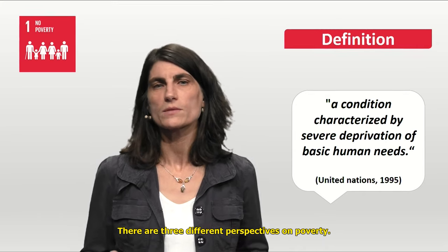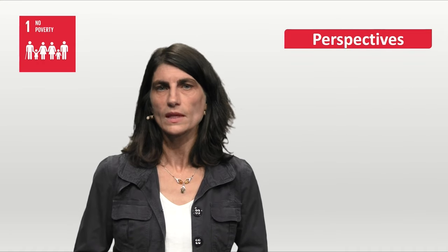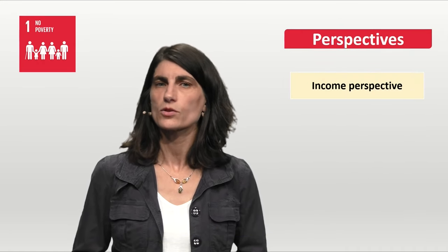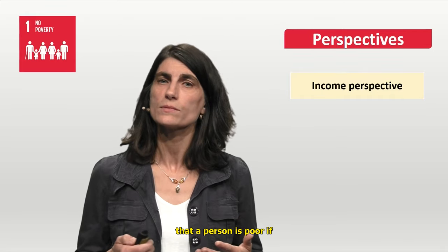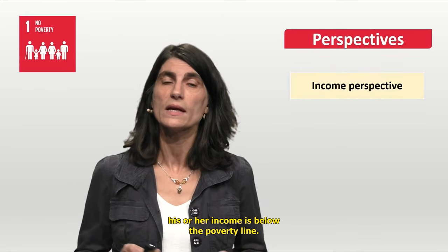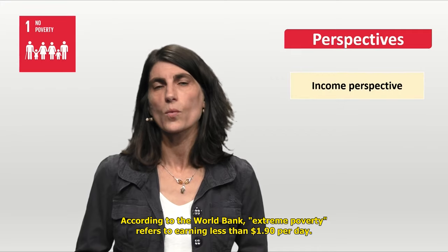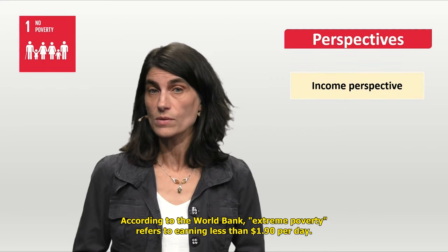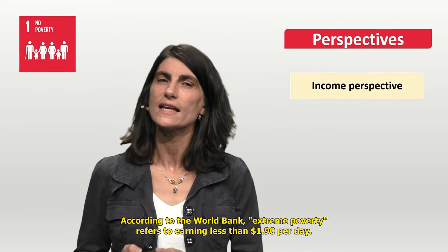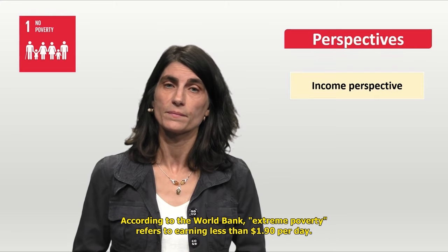There are three different perspectives on poverty. The first is the income perspective, which indicates that a person is poor if his or her income is below the poverty line. According to the World Bank, extreme poverty refers to earning less than $1.90 per day.